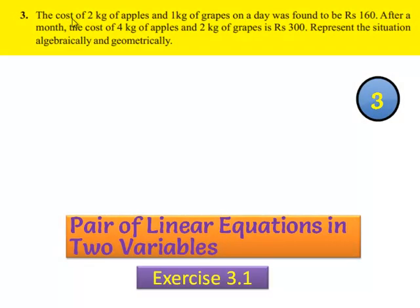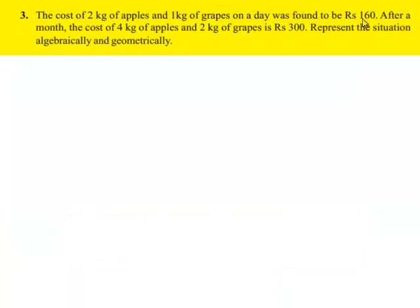Coming to the third problem. The cost of 2 kg of apples and 1 kg of grapes on a day was found to be 160 rupees. After a month, the cost of 4 kg of apples and 2 kg of grapes is 300 rupees. Represent this situation algebraically and geometrically.